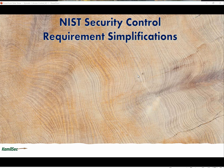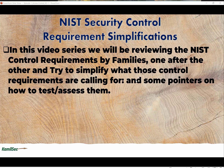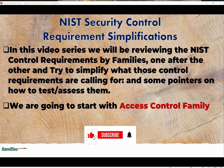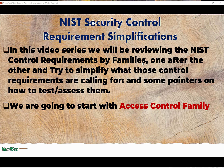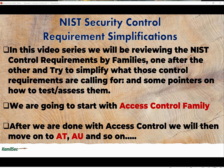In this video series, we will be reviewing the NIST Control Requirements by families, one after the other, and try to simplify what those control requirements are calling for, along with some pointers on how to test or assess them. We are going to start with the access control family — for the obvious reason of it being first in the list of controls. After access control, we will move on to awareness and training, audit and accountability, and so on.